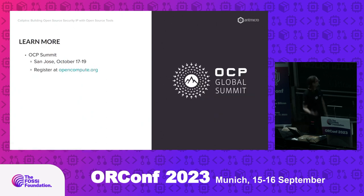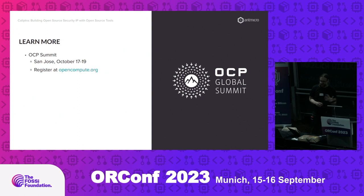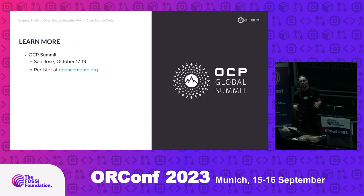If you want to learn more, there's the Chips Alliance event that I can renew the invitation to. I can also add that there's a Calyptra-focused session at OCP — there are five talks on Calyptra at the Open Compute Project Global Summit next month. So if you happen to be there or want to go there, I encourage you to seek out one of the five Calyptra talks and learn more about the nitty-gritty details of that project.